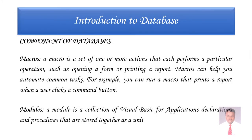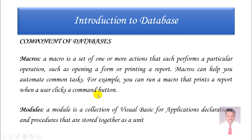The next component is macros. A macro is a set of one or more actions that each perform a particular operation, such as opening a form or printing a report. Macros can help you automate common tasks. For example, you can run a macro that prints a report when a user clicks a command button. You can define specific tasks by writing macros.